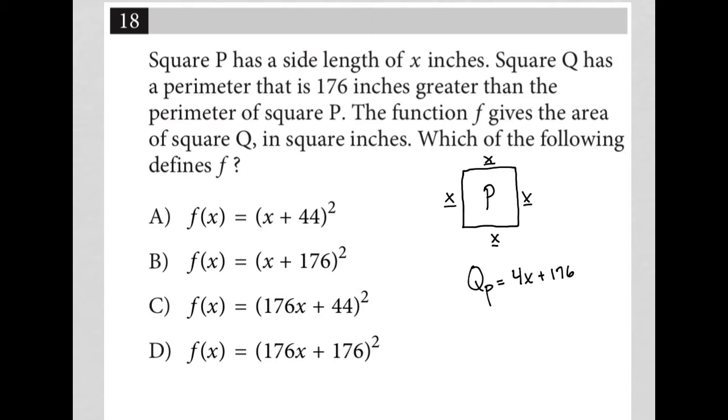The question goes on to say the function F gives the area of square Q in square inches. Which of the following defines F? So my square Q, the area is going to be found by multiplying side times side, which I'll just label as two S's. I need to figure out what that S is equal to.